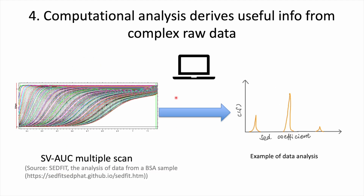What the optical system does is diligently collect all of these snapshots, or scans, over time — for example, one scan every few minutes. Over time we can get a series of these scans. Of course, having a human look at all of these multiple scans is extremely overwhelming. So how do we transform all of these raw data into something clearer to understand that can deliver useful information about our sample?